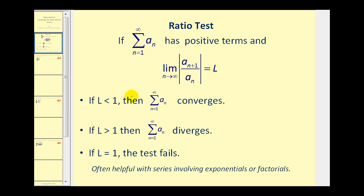If L is less than one, then the series converges. If L is greater than one, then the series diverges — and if the limit approaches positive infinity, it also falls into the diverges category. Lastly, if the limit is equal to one, the test fails. This test is often helpful when the series involves exponentials or factorials.